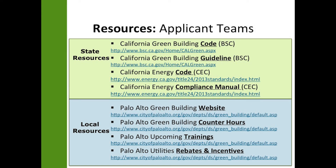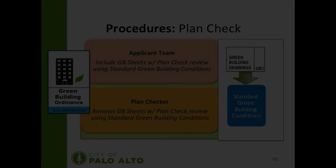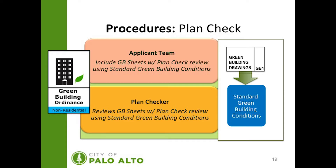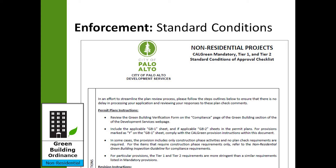This slide outlines resources for the applicant teams both at the state and local level. This slide outlines the procedures to prepare for your plan check. The applicant team will be required to include the GB sheets, review and complete them using the standard green building conditions found on the webpage. The plan checker will be responsible for reviewing the GB sheets within the plan check process using the standard green building conditions, so everybody's looking at the same document. This is an example of the standard conditions for non-residential projects — it's a very detailed conditions document that outlines the requirements.